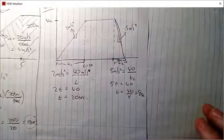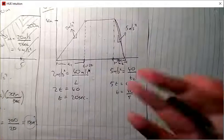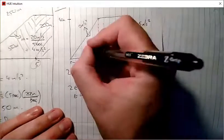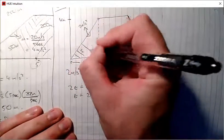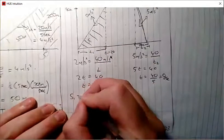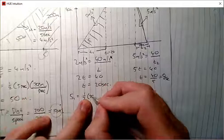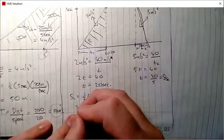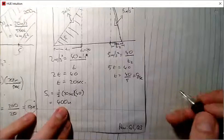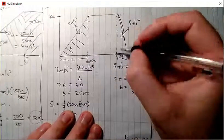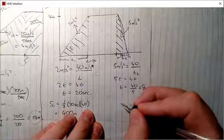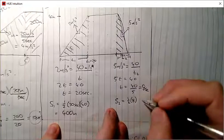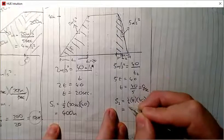Generally when you draw a velocity-time graph you work all this out before looking at the specific questions. Distance during acceleration, s₁: area of the triangle is half the base (20 seconds) times the perpendicular height (40 meters per second) = 400 meters. Distance during deceleration, s₂: half of base (8 seconds) times height (40) = 160 meters.